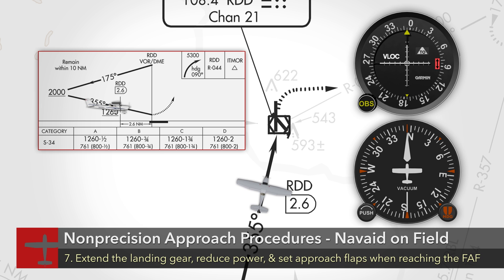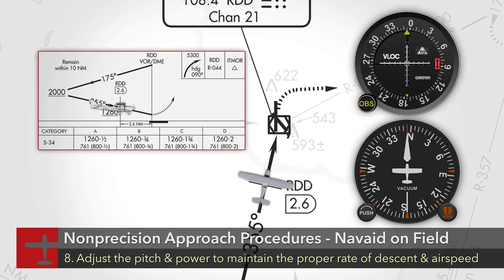When established on the approach course and at the final approach fix, extend the landing gear, reduce power, and set approach flaps. Adjust the pitch and power as necessary to maintain the proper rate of descent and airspeed.